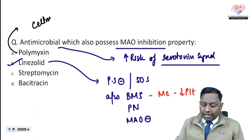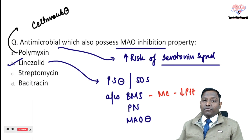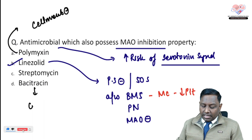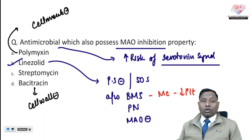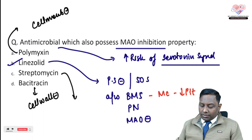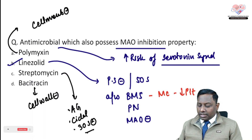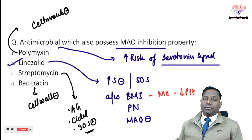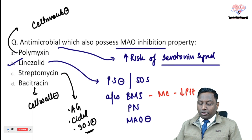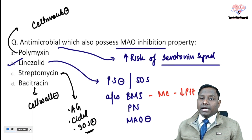Polymyxin is a cell membrane inhibitor mainly preferred for gram-negative organisms. Bacitracin is a cell wall inhibitor used topically. Streptomycin is an aminoglycoside — a cidal protein synthesis inhibitor acting at the 30S ribosome. These are some important points to remember.